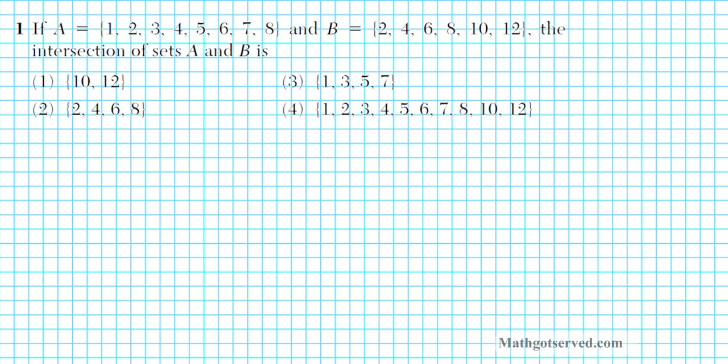It says if set A, which is 1, 2, 3, 4, 5, 6, 7, 8, and B, which is 2, 4, 6, 8, 10, 12, the intersection of sets A and B is. So intersection basically means the elements that are present in both sets. The easiest way for us to find the intersection of the two sets is to list them in such a way that identical elements are in the same column.